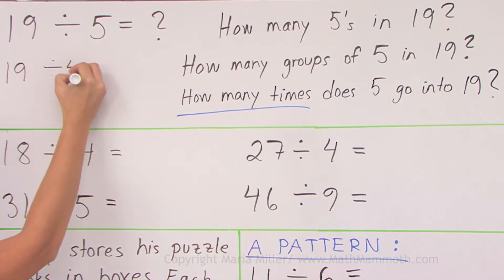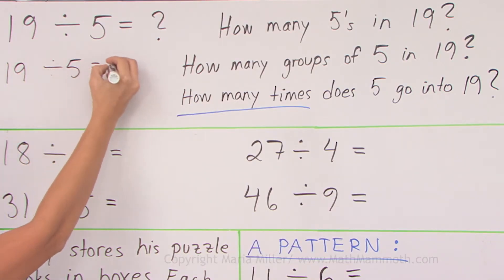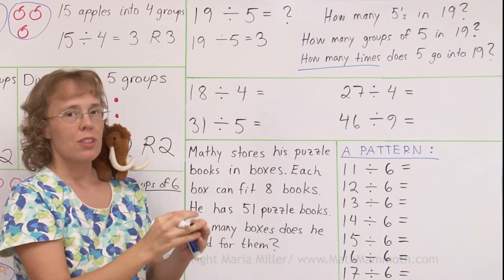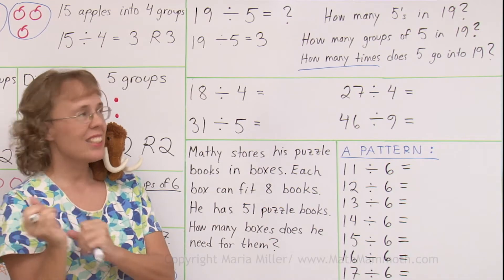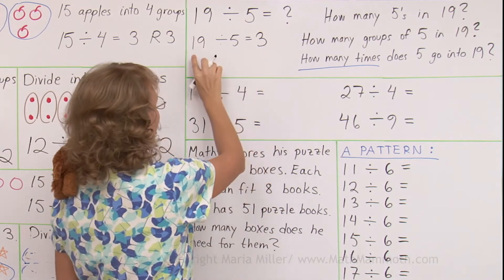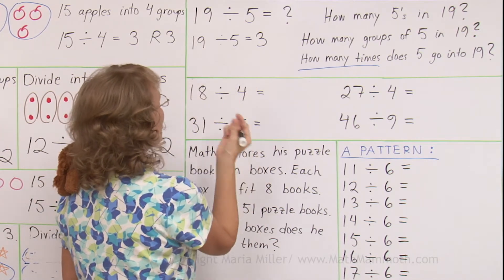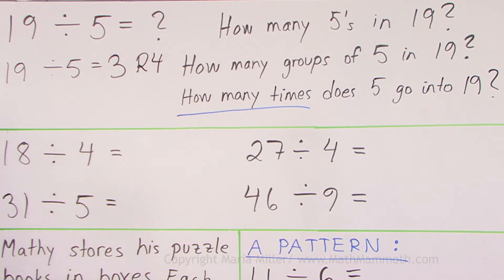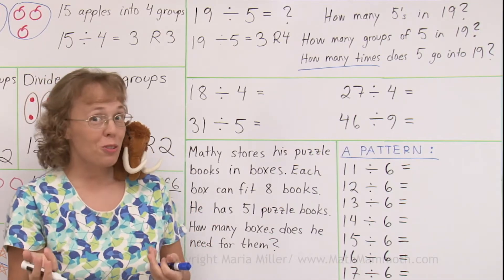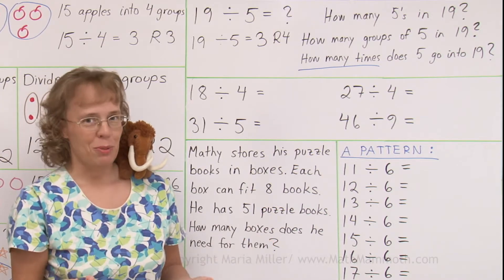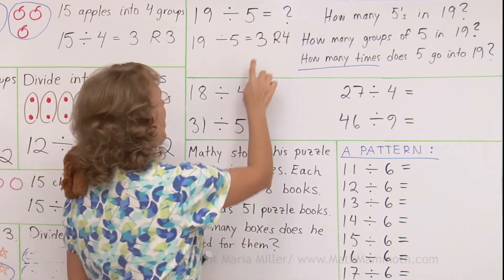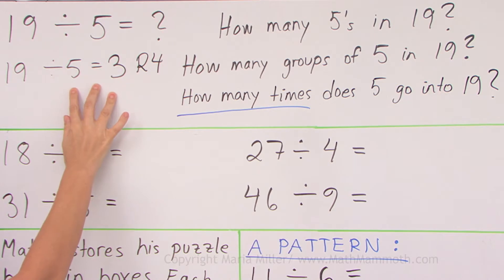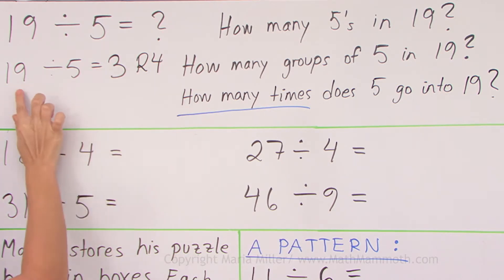19 divided by 5 equals 3. But there's a remainder, right? 3 groups of 5 kids makes 15 kids. The difference between 15 and 19 is 4 kids. There are 4 kids that have to either form a group of their own or not go into any group. You can check by multiplying 3 times 5 — the kids in groups is 15 — then add 4 and you get 19.